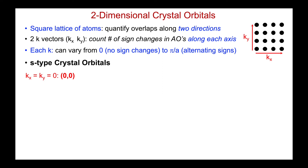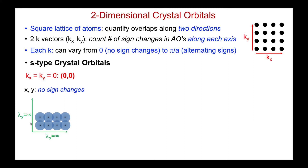Let's start with s-type crystal orbitals at kx equals ky equals zero. The notation is just (0, 0). That means there are no sign changes in the LCAO approach to constructing the crystal orbital wave function. Looking at s orbitals along the x direction, the wavelength is infinite, k is zero — all the s orbitals are plus, plus, plus, overlapping in phase. The same applies along the y direction: plus, plus, plus — all adding in phase. So in both directions, because they're s orbitals, they're all bonding. You can't get more stable than that.